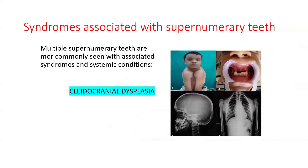The next associated condition is cleidocranial dysplasia, which is a triad of: abnormal or absent clavicles; abnormal dentition — that is, the presence of supernumerary teeth and delayed eruption of teeth; and delayed closure of the fontanels.